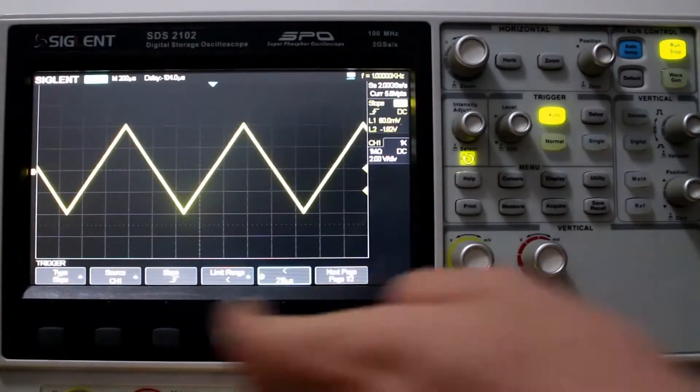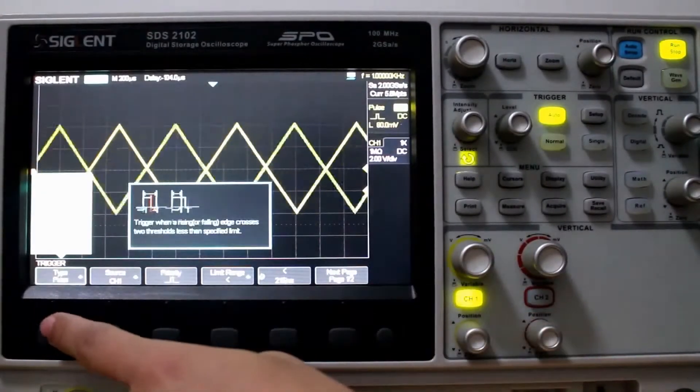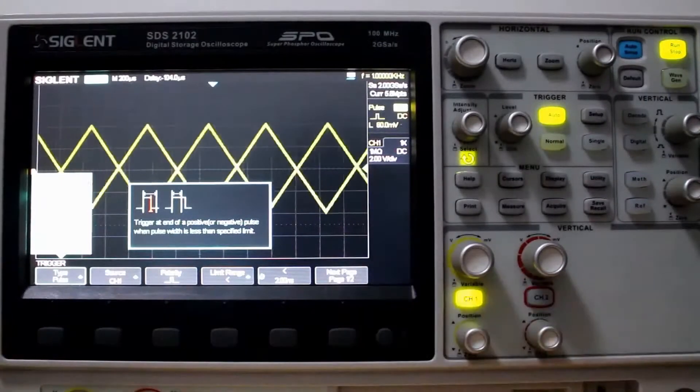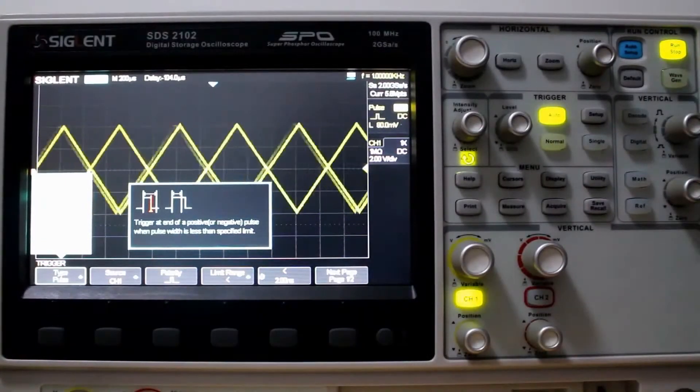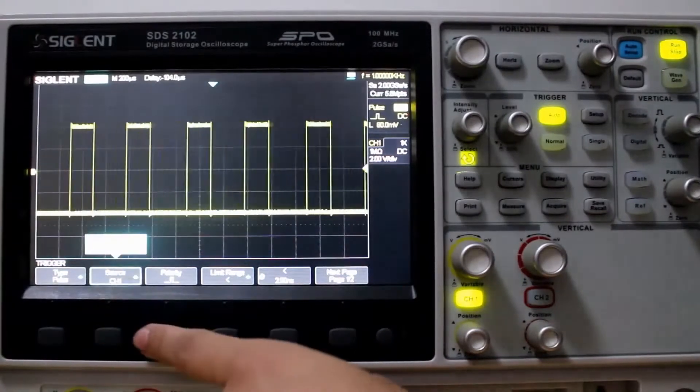Okay, now we looked at a slope wave. Let's change that to pulse. And I'll change the output here to a pulse wave so we can measure that.